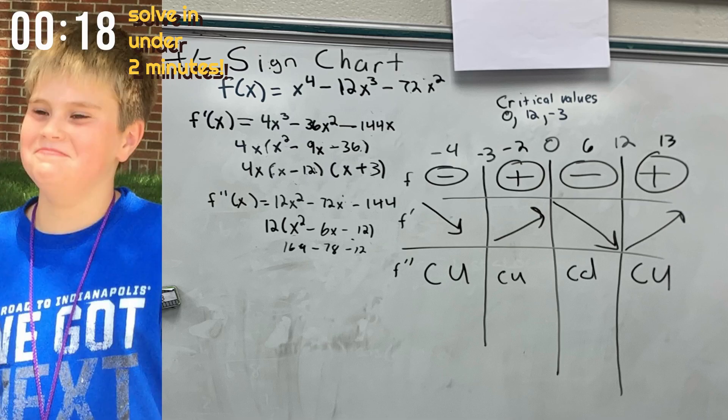First, for the value of negative 4, f is negative, and then the slope is also decreasing. But when you use the second derivative, you can see that it is concave up. Now, for negative 2, you can see that f is positive, and f prime is increasing, which is the slope.